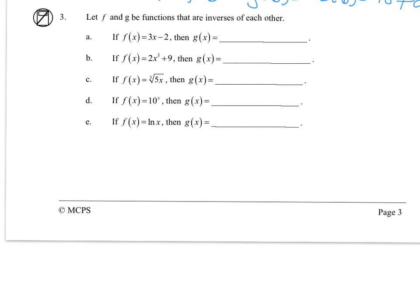For problem 3, these functions are inverses of each other. For part a, we start with x, then multiply by 3, and then subtract 2. To go backwards, we add 2 and divide by 3, so the inverse is (x + 2) divided by 3.